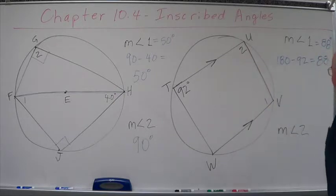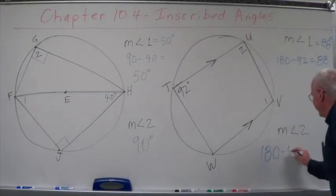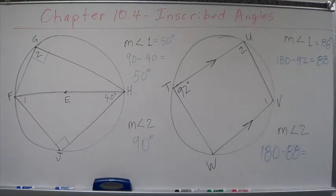Now, 88 and angle 2 have to be supplementary. So we're looking at 180 minus 88. But, duh, what do you think that is? I think that fits right there. So this is 92 degrees. This equals 92 degrees.